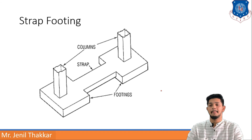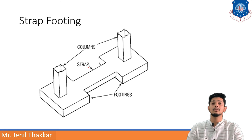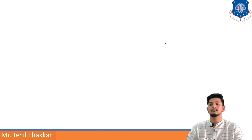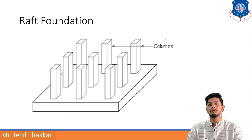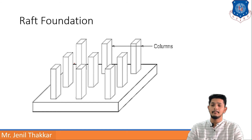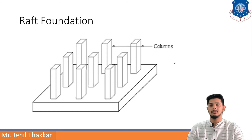In strap footing, two columns are joined with a strap beam. When two footings are connected by a strap beam, they are known as strap footings. For raft foundation, when the load is uniform and heavy, a raft foundation is preferred. In tall buildings, raft foundations are also common. Here you can see a number of columns with the entire base covered with RCC — that is raft foundation, also known as mat foundation as it resembles a mat on the soil surface.